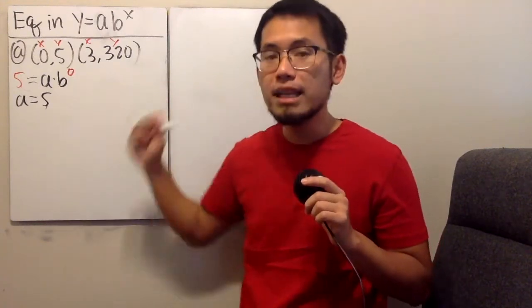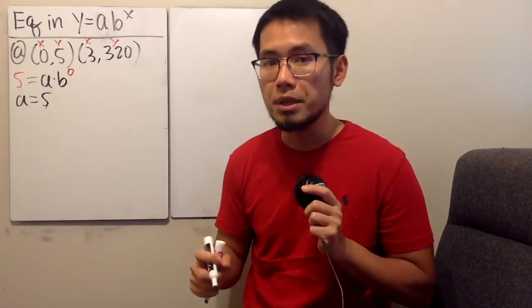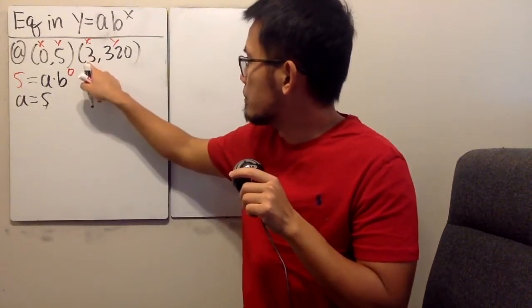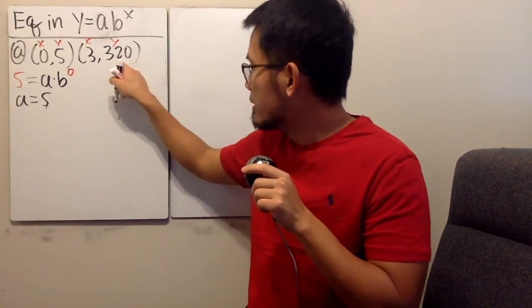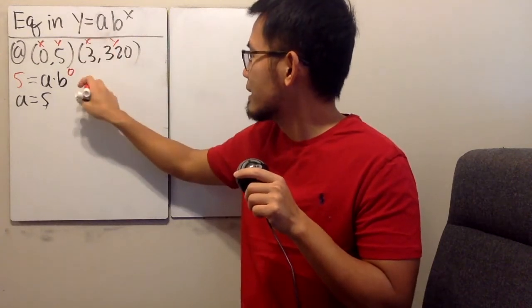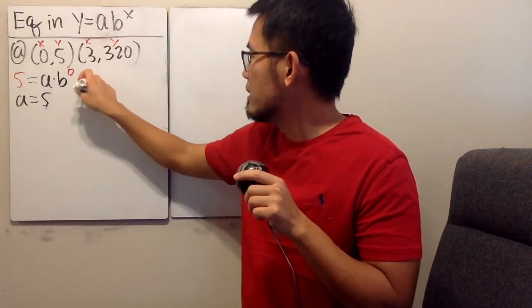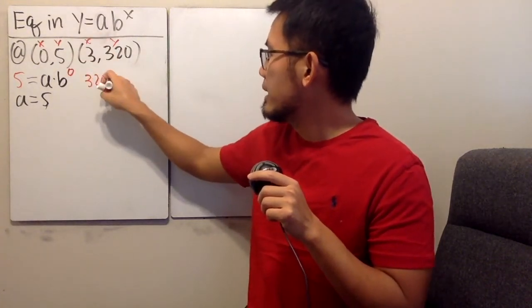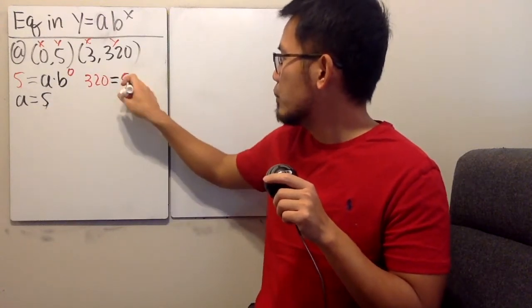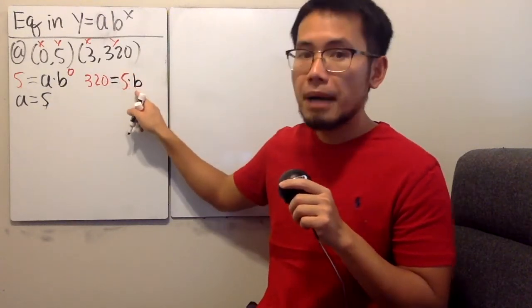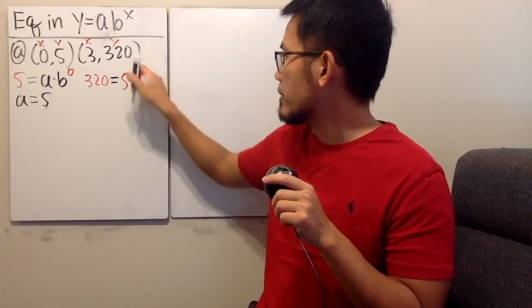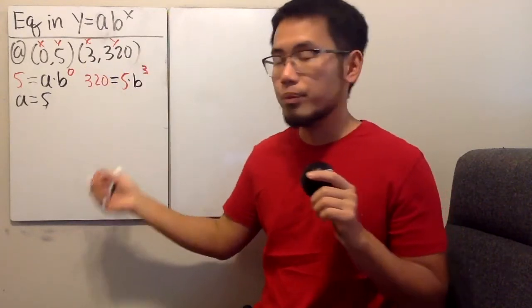Then we can use the other point to help us find out what b should be. Now x is 3, y is 320 — just put that right here. So we will have 320 equals 5 times b to the third power. The b we don't know, but the x is 3.